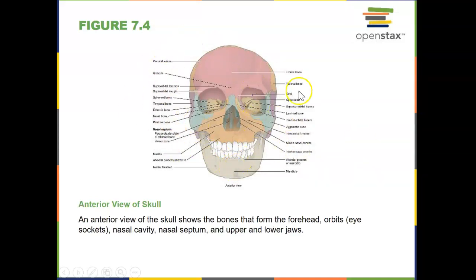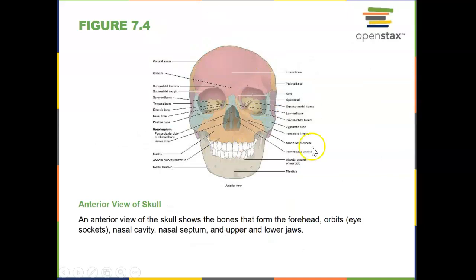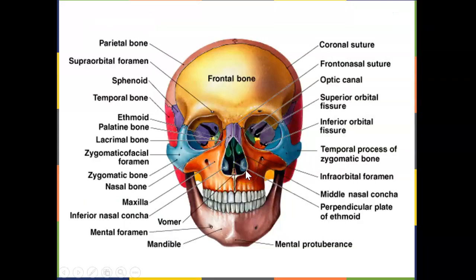Looking at the anterior view of the skull: the frontal bone is where your forehead is. The parietal bones are right behind the frontal — left and right — connected by the coronal sutures. The supraorbital foramen is a hole through which nerves from the brain contact muscles, sensory neurons in skin, thermal receptors, pressure receptors, and so forth.